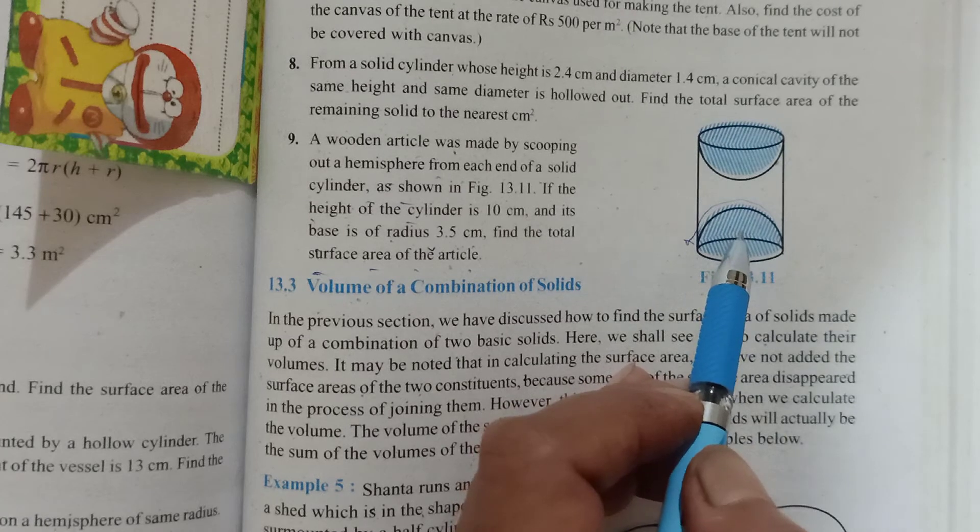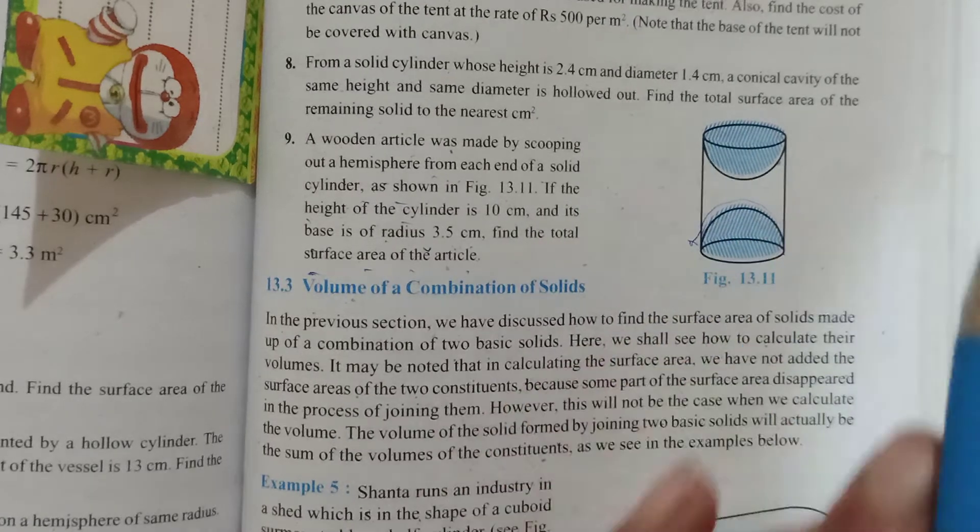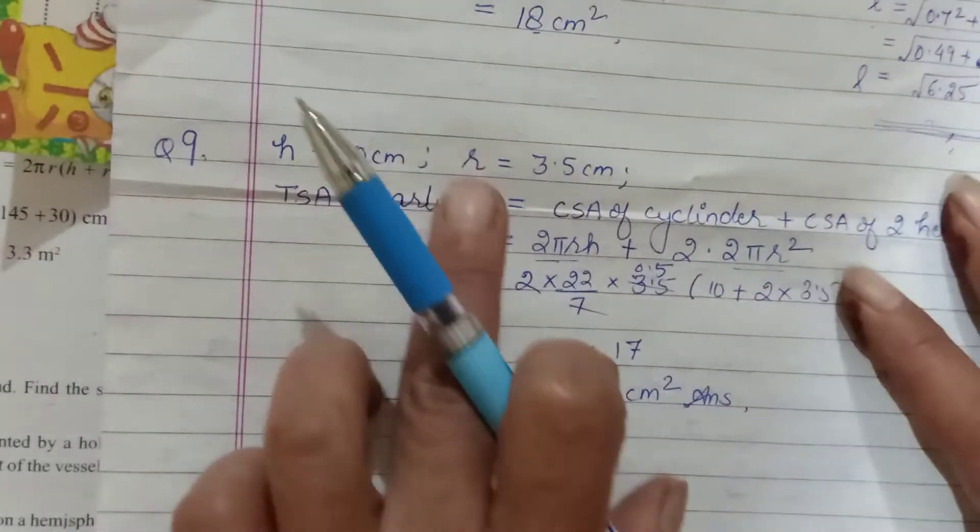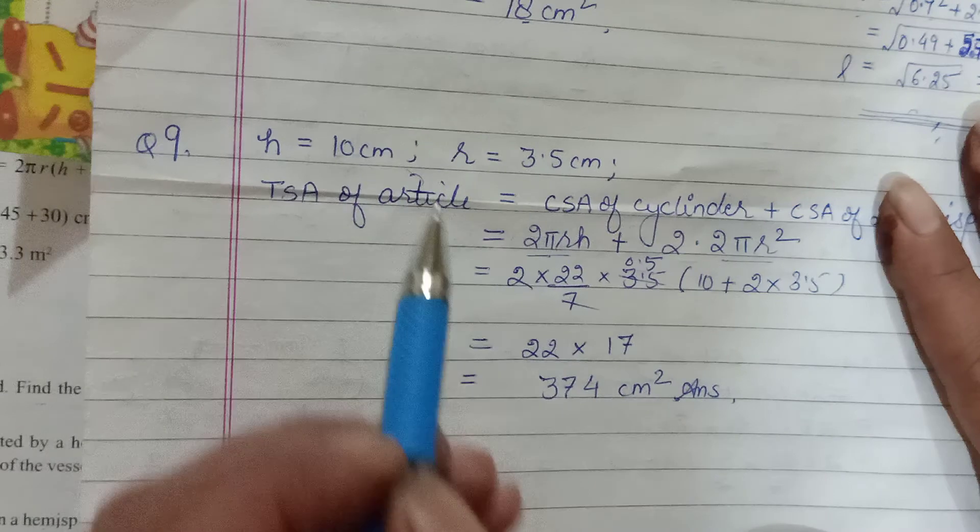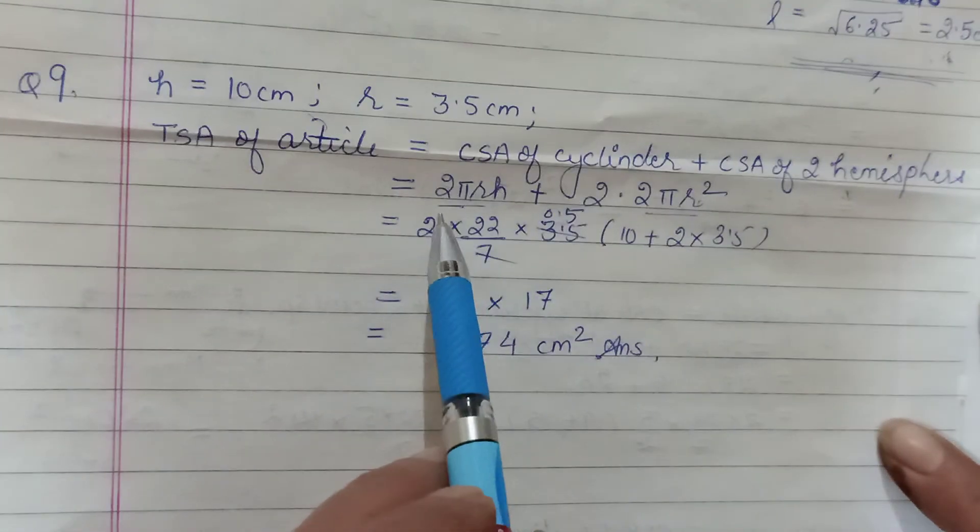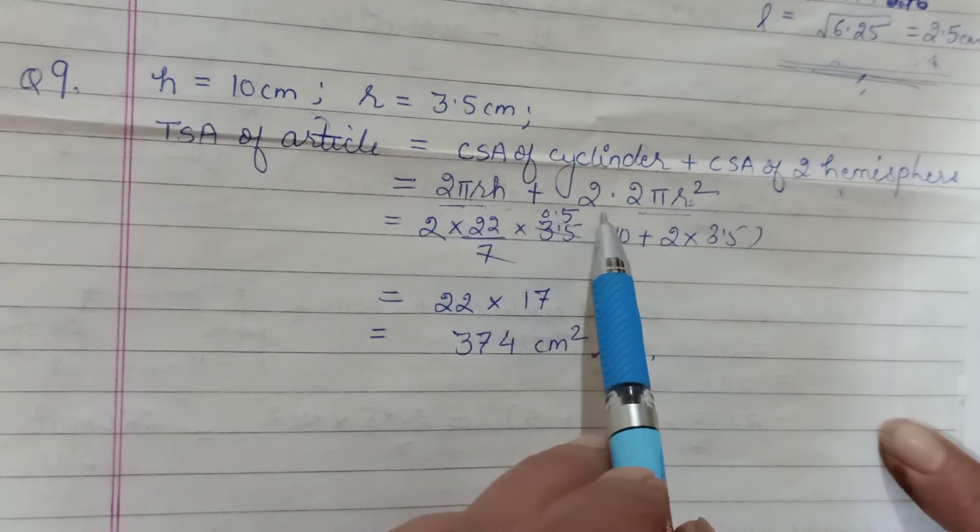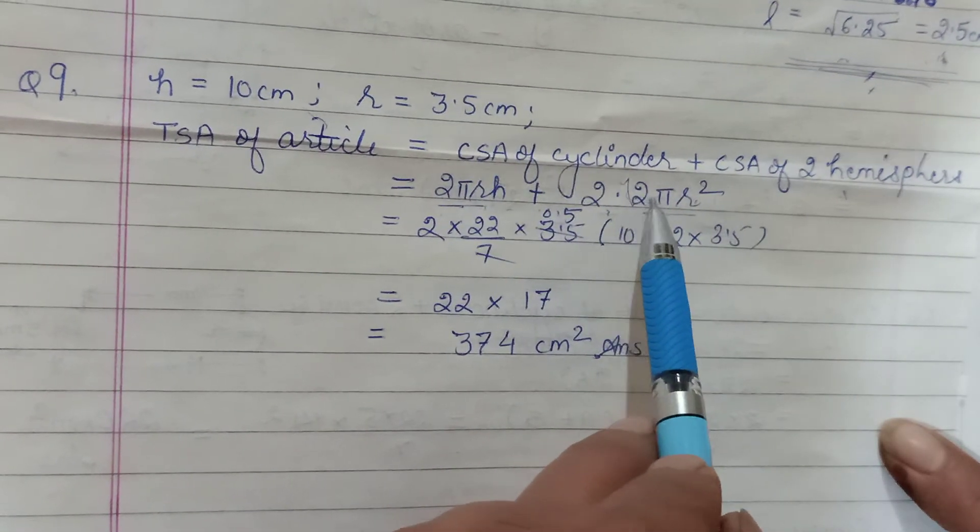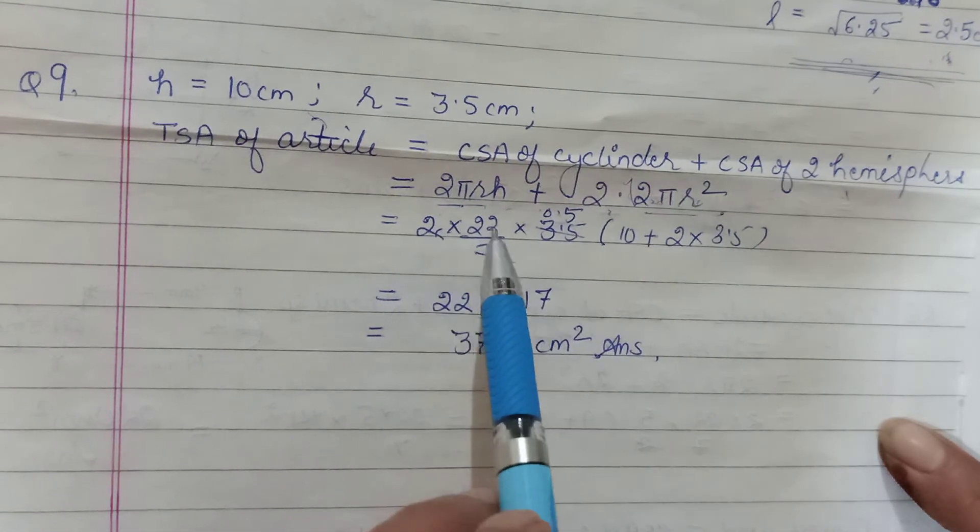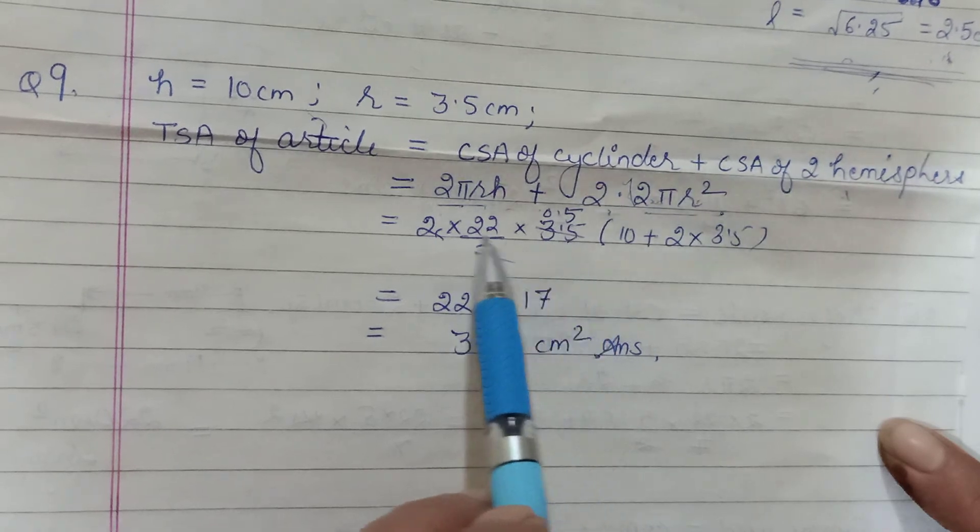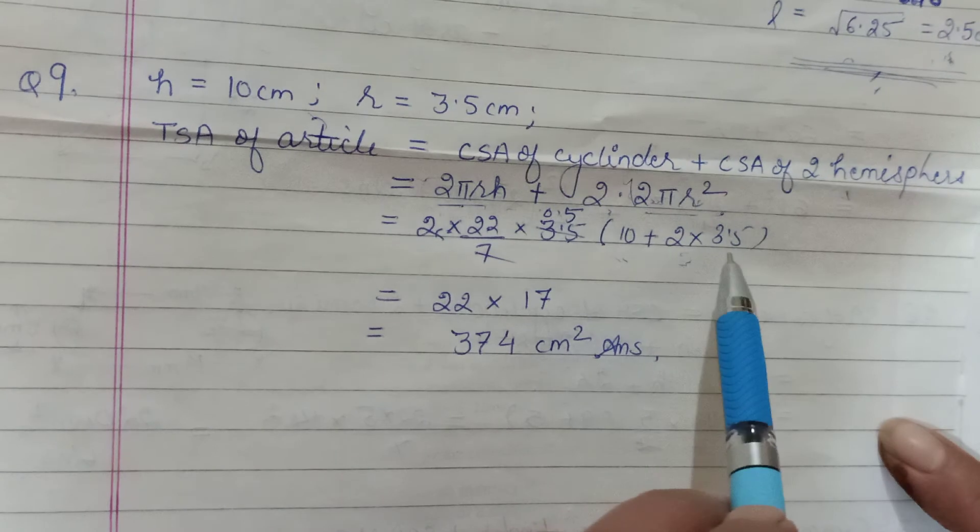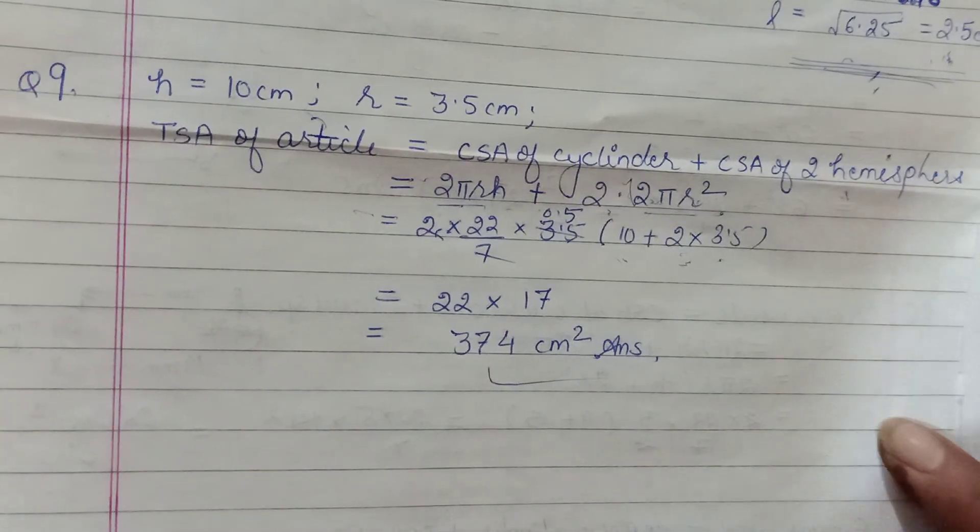So two hemispheres and CSA of cylinder. Therefore we would say that TSA of this article is CSA of cylinder plus CSA of two hemispheres. So CSA of cylinder - 2πrh. Two because there were two hemispheres, and hemisphere is 2πr². Again, our common - usually we can see we have a 2 and a π and a r common. I've taken that common. Then inside, whatever was left, that was our h, and from here two times r. Calculate, get your answer.